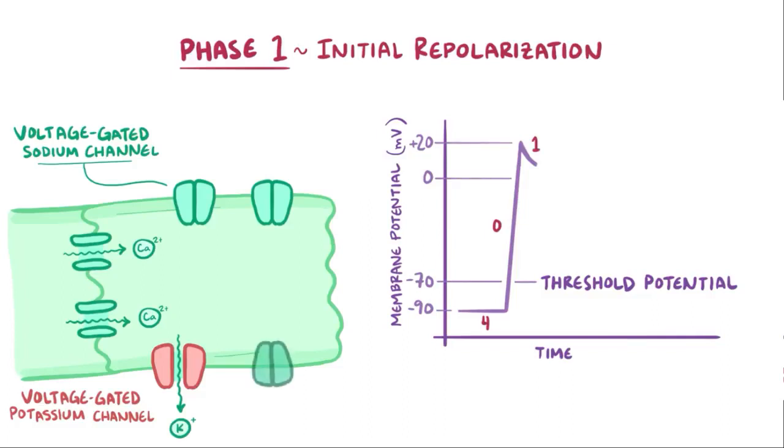Shortly after this though, the voltage-gated calcium channels open up, and that allows calcium ions into the cell. As calcium flows in, it brings with it a positive charge. That positive charge from the calcium ions flowing in counterbalances the positive charge from the potassium ions that are flowing out. So the membrane potential actually stays pretty stable.